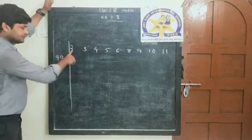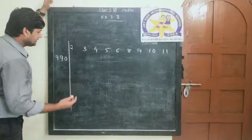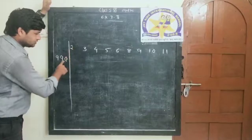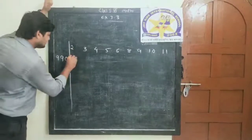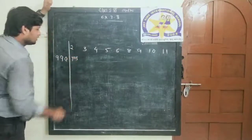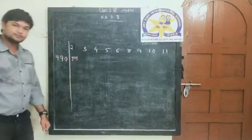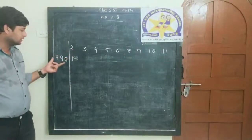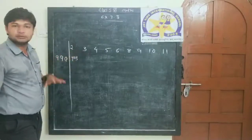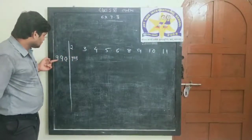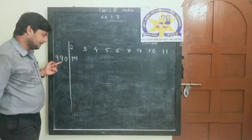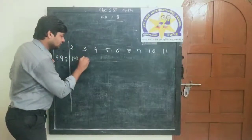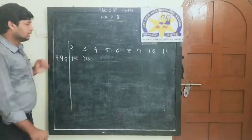For 990: is it divisible by 2? Check the unit digit — 0 is divisible by 2, so yes. Is it divisible by 3? The sum of digits: 9 plus 9 plus 0 equals 18. 18 is divisible by 3, so yes, it is also divisible by 3.